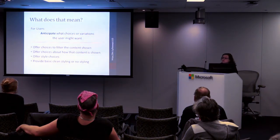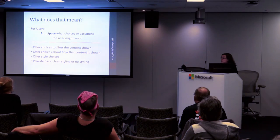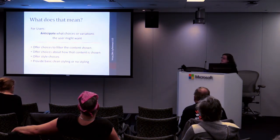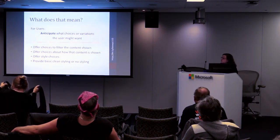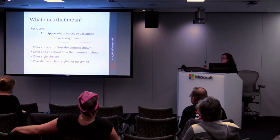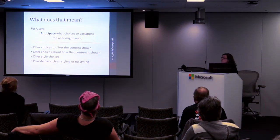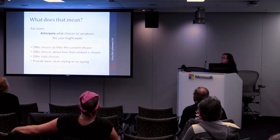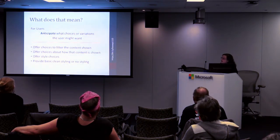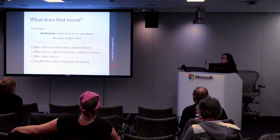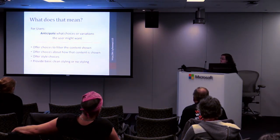For users, I said anticipate choices or variations the user might want. I'm a firm believer in giving the user lots of choices, though there's also a philosophy in the WordPress community about not giving too many choices. What I mean by anticipating choices is offering ways to filter the content being shown and offering choices about how that content is shown — for example, whether a thumbnail is shown and other information. Also offering style choices, or at the very least providing clean basic styling using standard elements that will look like the rest of the theme, or even no styling at all.